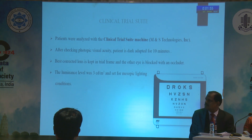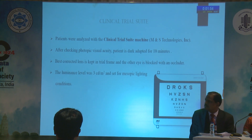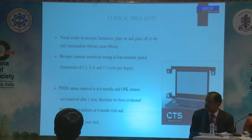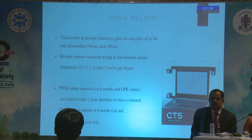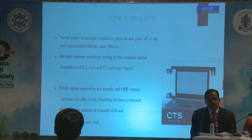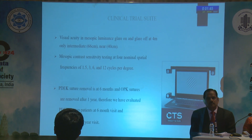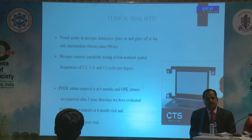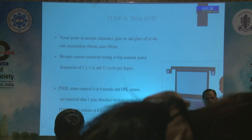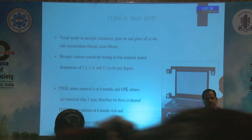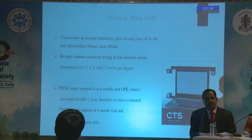The luminance level was kept at 3 candelas per meter square and set for mesopic lighting conditions. Visual acuity was measured in mesopic luminance with glare on and off at 4 meters, and with glare off at intermediate distance of 66 cm and near at 40 cm. Mesopic contrast sensitivity was checked at 4 spatial frequencies: 1.5, 3, 6 and 12 cycles per degree.